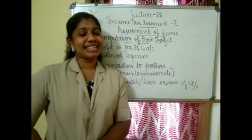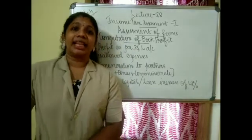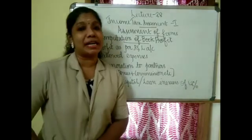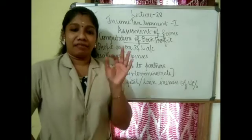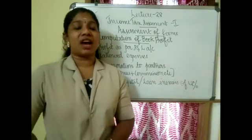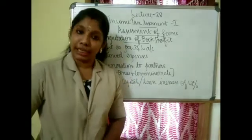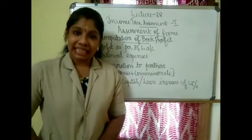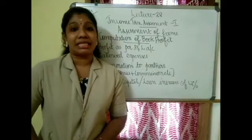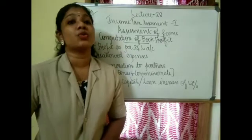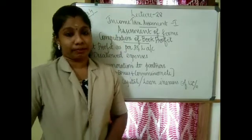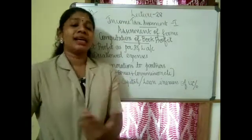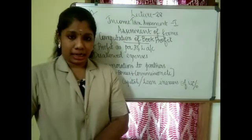In the last class we discussed the rate of tax for a firm. It is 30% — a firm is liable to pay tax at the rate of 30% on their total income, plus a surcharge of 12% if the total income exceeds 1 crore.